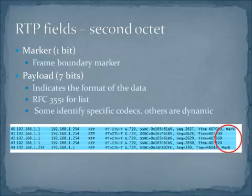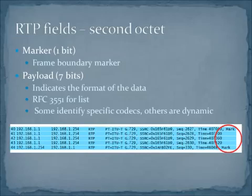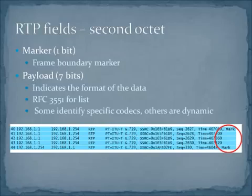In the second octet, the first bit is a marker, which provides a boundary in the data stream for measuring purposes. The second group of bits is the payload type, which indicates what type of data you're actually carrying. RTP data is just hexadecimal values, so without this field you'd have no way of determining what was being carried. The payload tells us what codec was used to encapsulate this data — and in the capture you can see that G.729 was the codec used.